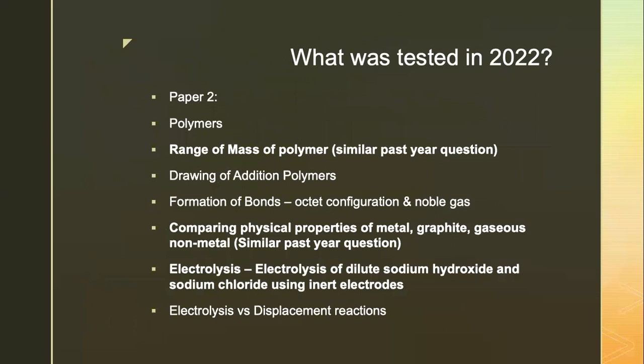In section B, the free response section, the database question was on addition polymers and the range of mass of polymers — very similar to the previous year's paper. Students who drilled past papers had an upper hand. The way to answer that question is the same: how to draw addition polymers based on the given structure. There was something new called co-polymer, but it was straightforward to understand based on the information given.